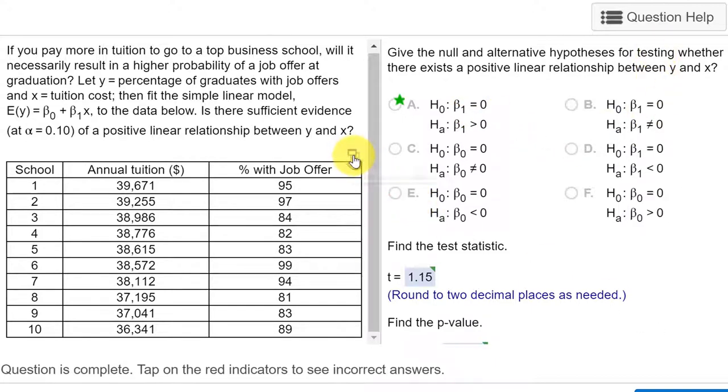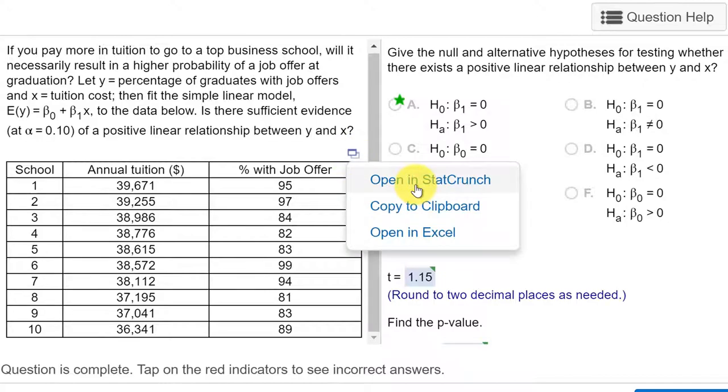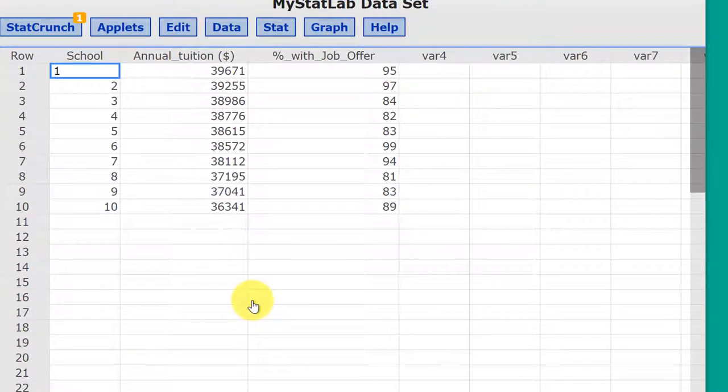We're going to go down here and click on open in StatCrunch. Okay, I have the data open in StatCrunch. Remember that our tuition is our x value, that's our predictor variable, and our response variable is the percentage of students with job offers.